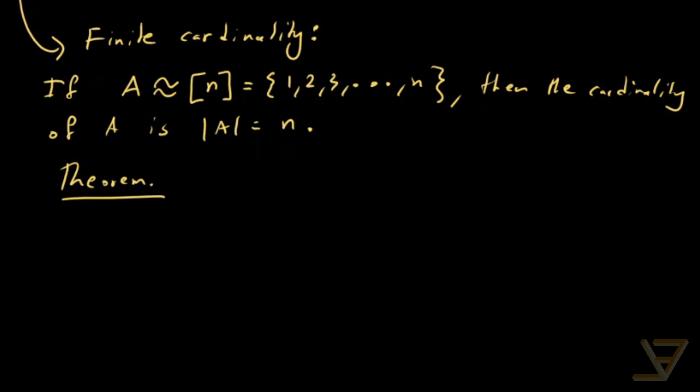which says that if A is equipotent with [n] and A is equipotent with [m], then M equals N. So, cardinality is well defined.